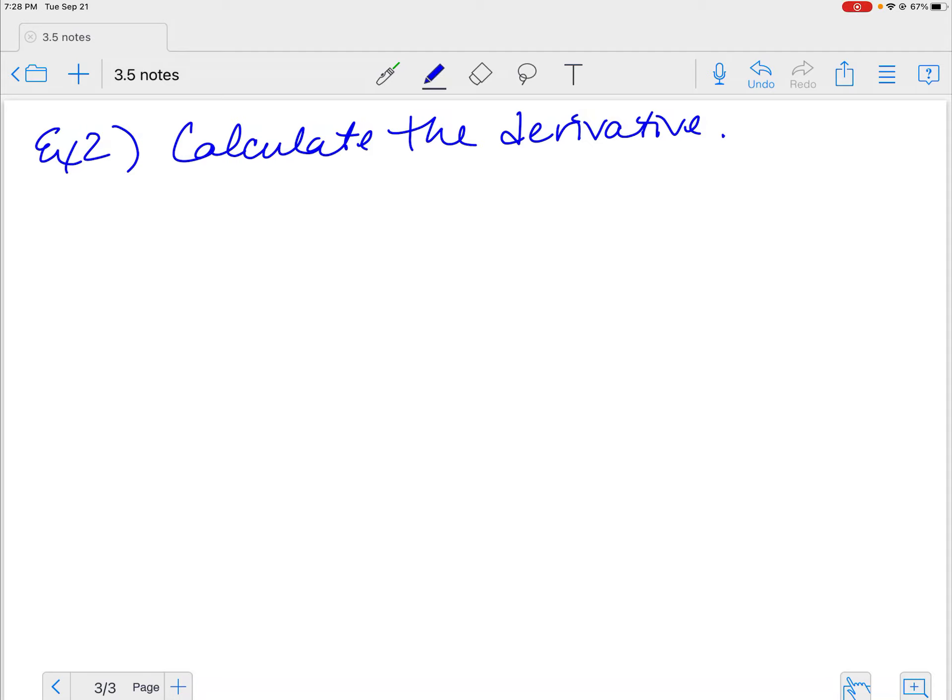So remember how I told you with the product rule, the ones we were doing were just wimpy because we just wanted to practice the process? Well, here they are in real life. Y is equal to x squared cosine x. We're going to calculate this derivative.